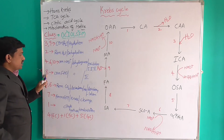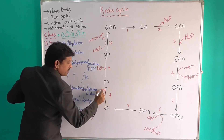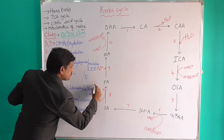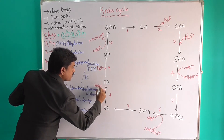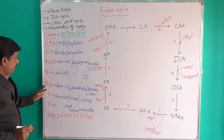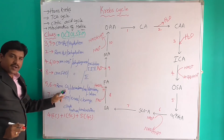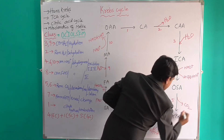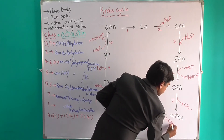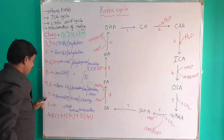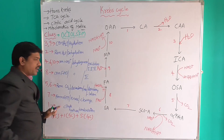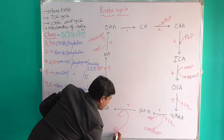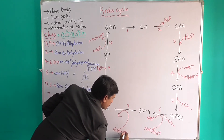Stage 8 is combined with FAD. Stages 5 and 6 involve removal of carbon dioxide. Stage 7 is the formation of GTP: GDP + Pi → GTP.